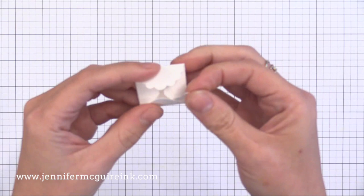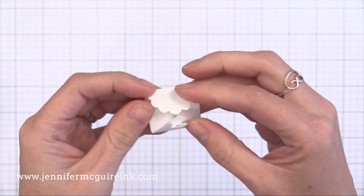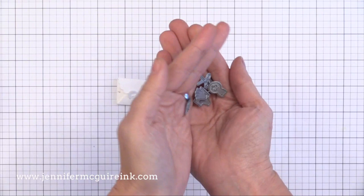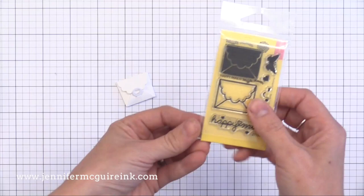Now this die also comes with a bunch of tiny little tabs that you can insert into the little slit in the front and this helps to keep it closed. There are a few different little dies included that you can use for this. I didn't use these dies today but I did want to show you that that is included.